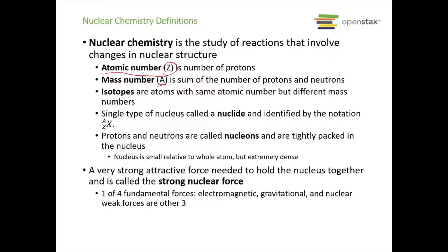When we have a single type of nucleus, we call this a nuclide, and we use atom notation where A is the mass number, Z is the atomic number, and X is the chemical element symbol. Protons and neutrons together are called nucleons — they're tightly packed in the nucleus, which is very small relative to the entire atom but very dense. For example, a nuclide has an average density of 1.8 × 10¹⁴ g/cm³, compared to water's 1 g/cm³.